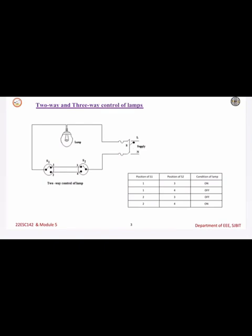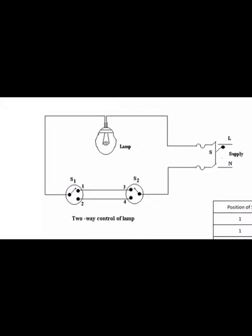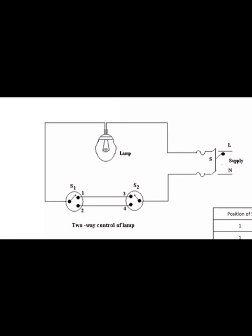For a two-way lamp, it is similar but the difference is we use two switches to control a lamp instead of a single switch. We name these switch one (S1) and switch two (S2). The connection is similar to a single switch: the line is given to the lamp, from the lamp it is given to switch one, then switch two to neutral.